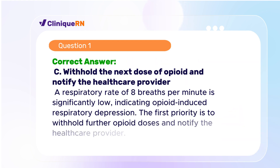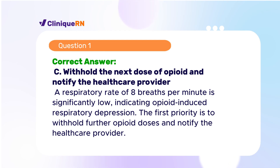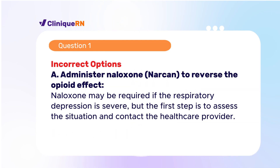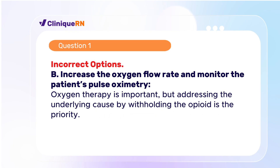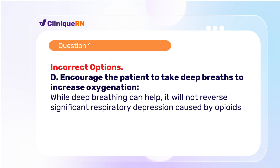The correct answer is C: Withhold the next dose of opioid and notify the healthcare provider. A respiratory rate of eight breaths per minute is significantly low, indicating opioid-induced respiratory depression. The first priority is to withhold further opioid doses and notify the healthcare provider. Naloxone may be required if the respiratory depression is severe, but the first step is to assess the situation and contact the healthcare provider. Oxygen therapy is important, but addressing the underlying cause by withholding the opioid is the priority. Encouraging deep breaths will not reverse significant respiratory depression caused by opioids.